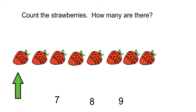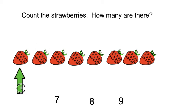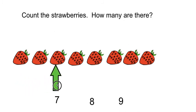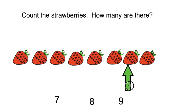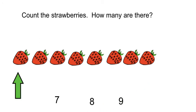Let's double check by counting the strawberries again. Ready? 1, 2, 3, 4, 5, 6, 7, 8. There are 8 strawberries.